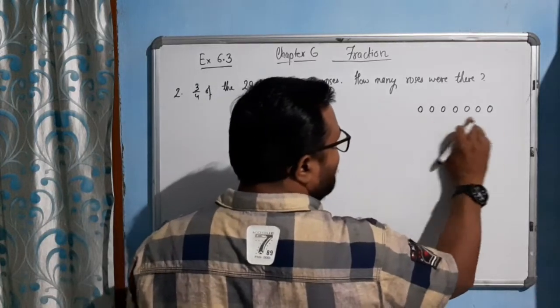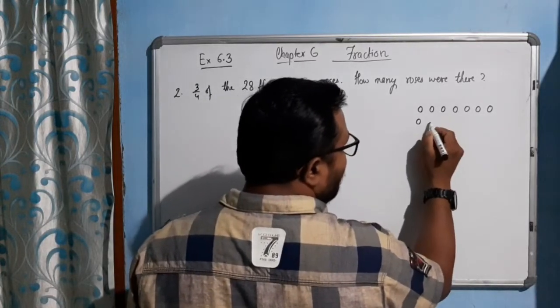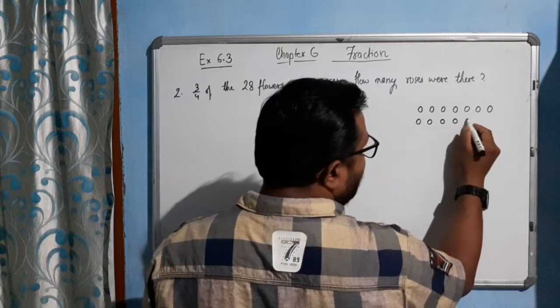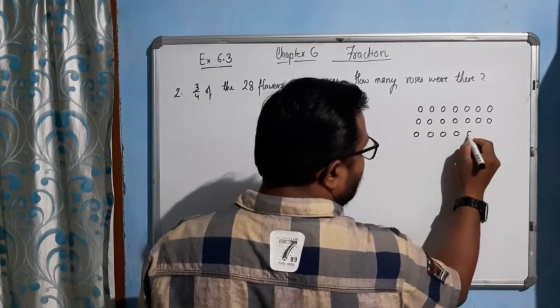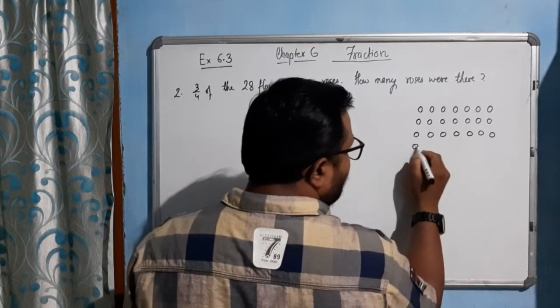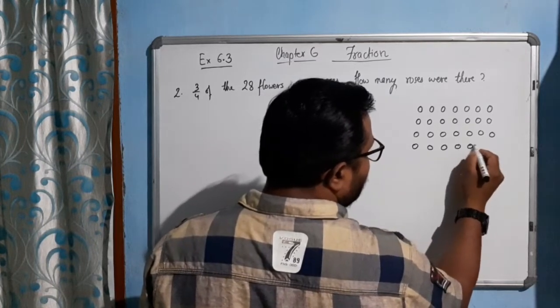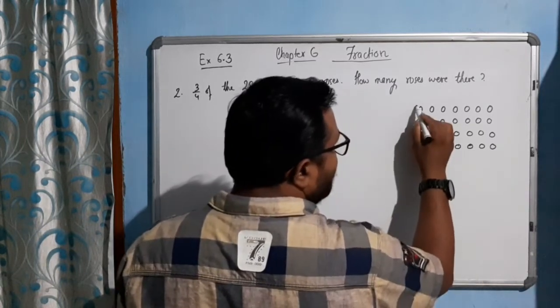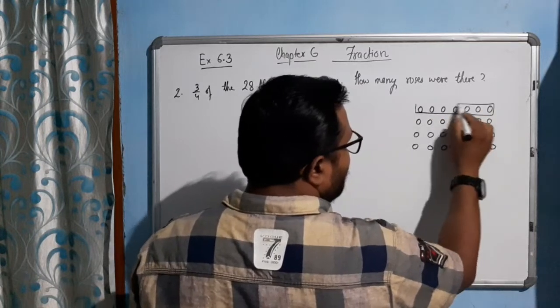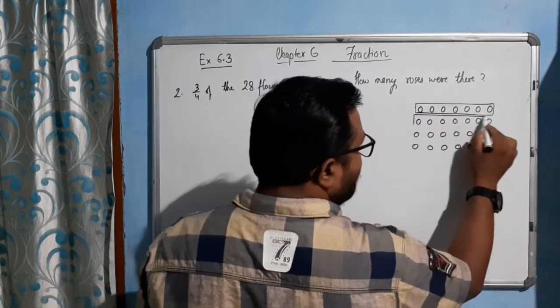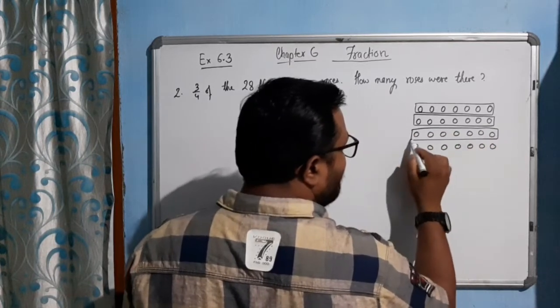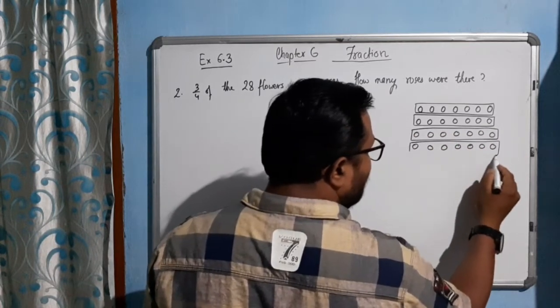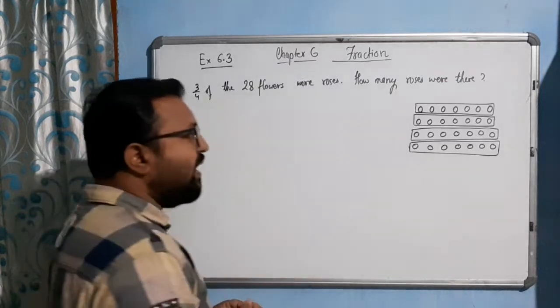Seven, eight, nine, ten... continuing to twenty-eight. See here, in one packet seven flowers are packed. All the twenty-eight flowers are divided equally.